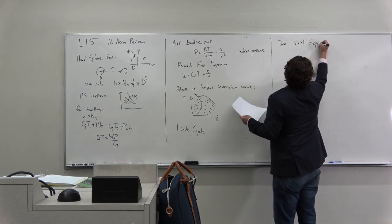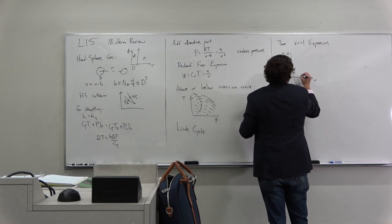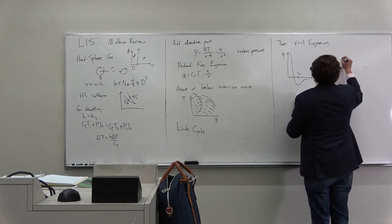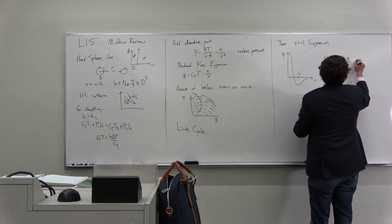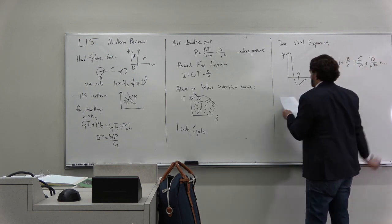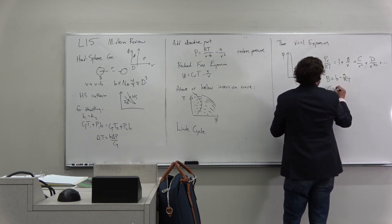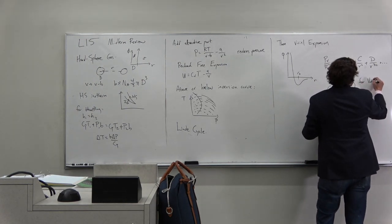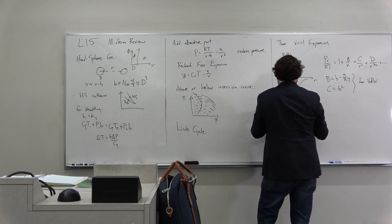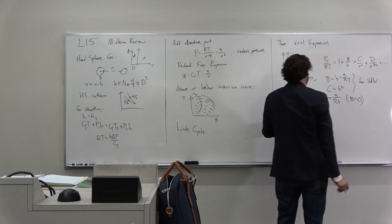Then we talked about the virial expansion to explain the rest of the curve of phi versus r. We rewrote the ideal gas as an expansion in powers of the molar density. Then we said for van der Waals gas that B was equal to B minus A over RT, and C was equal to B squared. This led us to thinking about the boil temperature: TB was A over RB, when B equals zero.